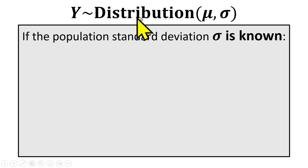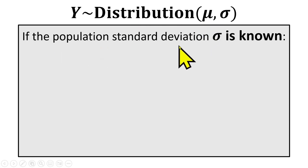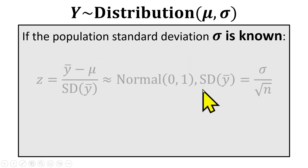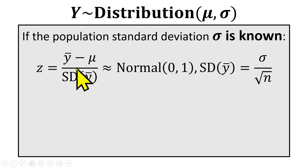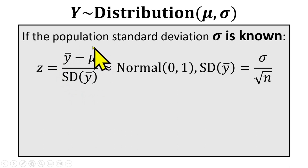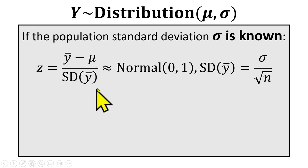Y follows some distribution — it has a mean, it has a standard deviation. If that population standard deviation is known, then if we take our sample mean and we standardize it in the usual way — here we're standardizing by dividing by the standard deviation of the mean — then this standardized value will be approximately normal in distribution with a mean of zero and a standard deviation of one. In other words, this standardized value will be approximately z in distribution.